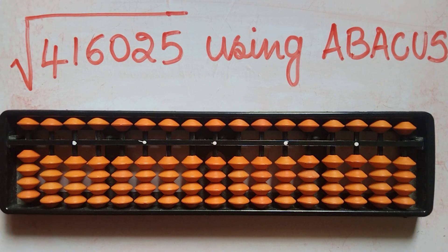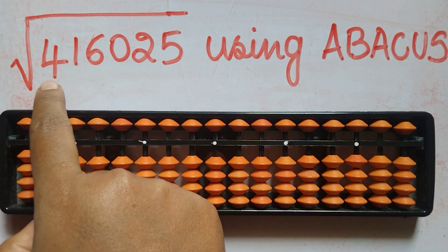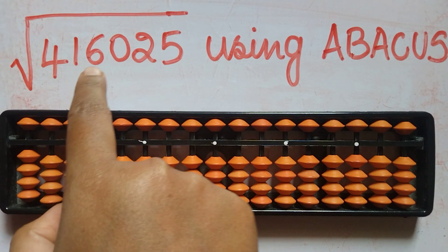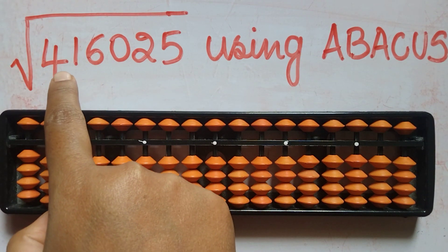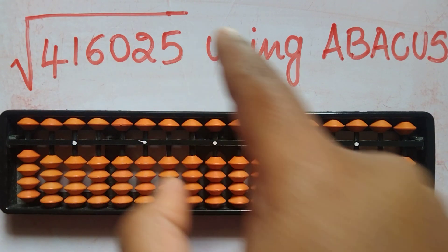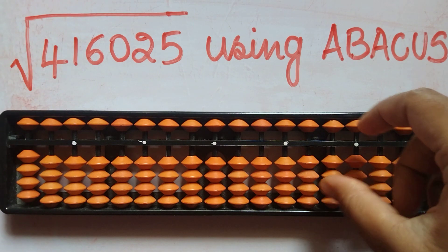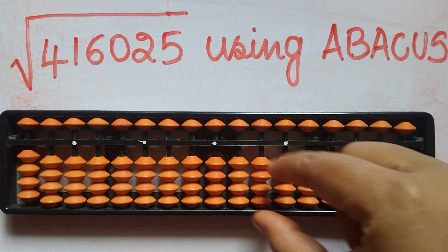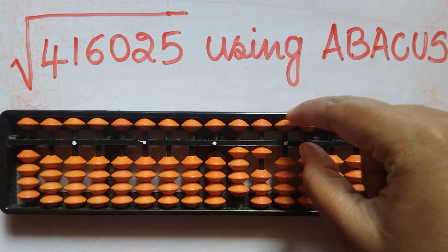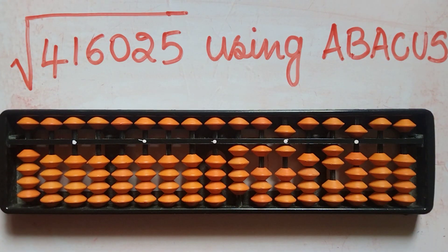We are going to find the square root of 4,16,025. First, we are going to place that number on the abacus: 4, 1, 6, 0, 2, 5.